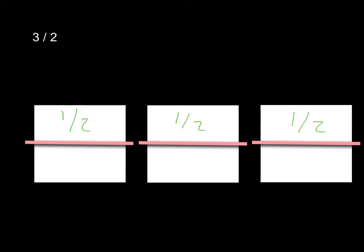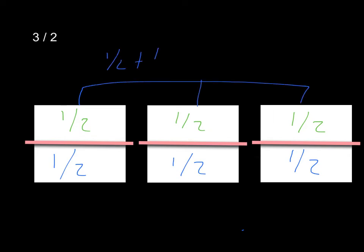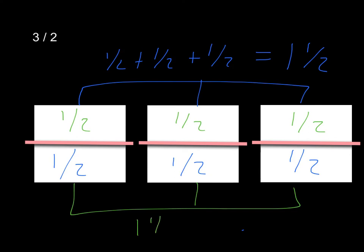So for another problem: if we have three halves, that's the same as dividing three into halves, or into two pieces each. We have one, two, three rectangles, split into two pieces each. If I count up all the halves, I have one half plus one half plus one half on top, and the same on the bottom. Adding those three pieces together: one half plus one half plus one half equals one whole and one half. So three halves is the same as one and a half, and three divided by two is the same as one and a half.